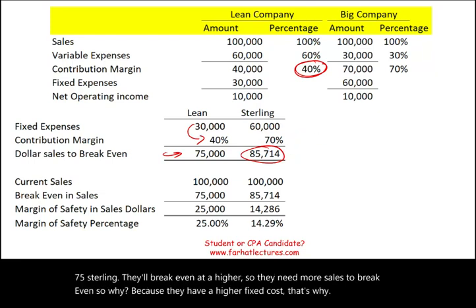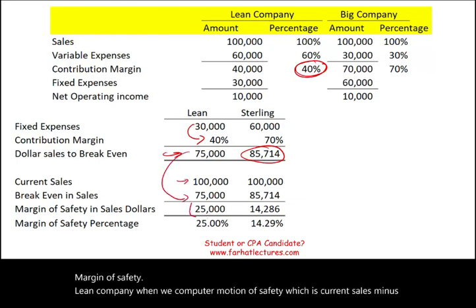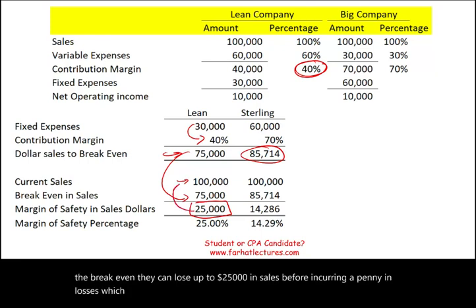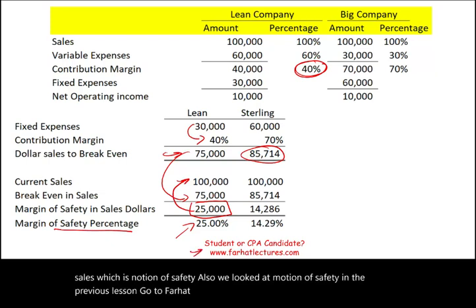For margin of safety, lean company's margin of safety is current sales minus break-even. They can lose up to $25,000 in sales before incurring a loss, which represents 25,000 divided by 100,000 — a 25% decrease in their sales. That is the margin of safety.